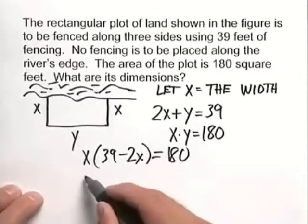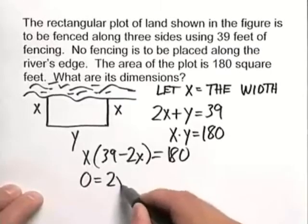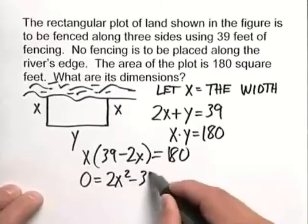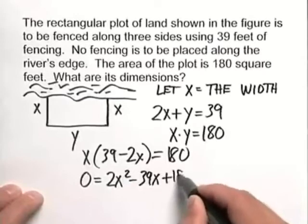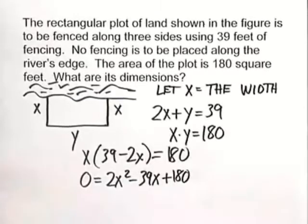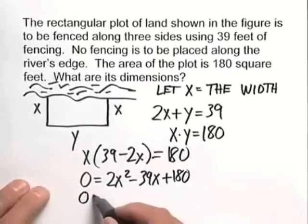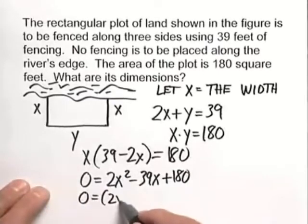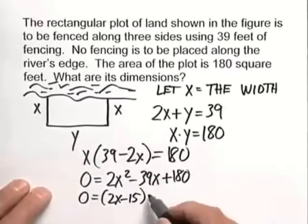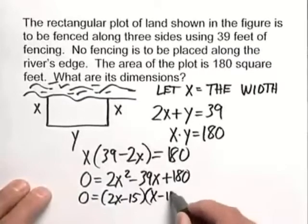And from this, we'll come up with 0 equals 2x squared minus 39x plus 180. And again, that's a nice quadratic that will factor into the following: 2x minus 15, and that will be taken times x minus 12.